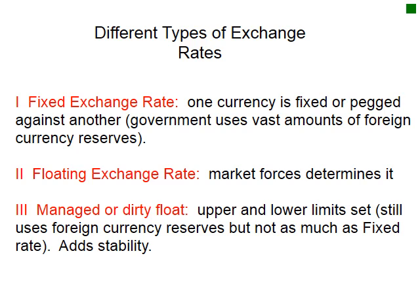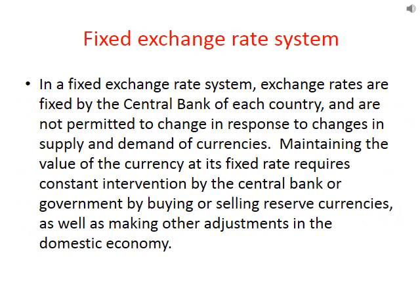There are three types. One, a fixed exchange rate where one currency is fixed or pegged against another — to do this the government has to use vast amounts of foreign currency reserves. Two, a floating exchange rate where market forces of supply and demand determine the exchange rate. And three, a managed or dirty float where there's an upper and lower limit set, using foreign currency reserves but not as much as the fixed rate, adding stability.